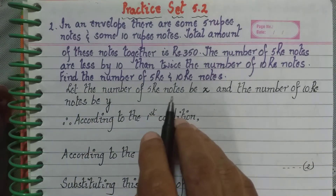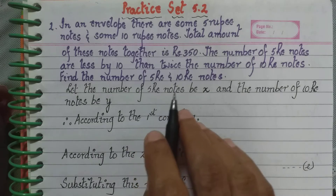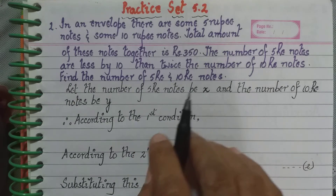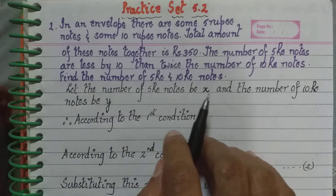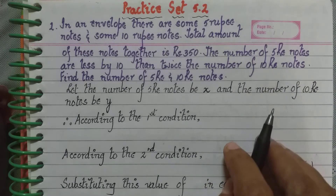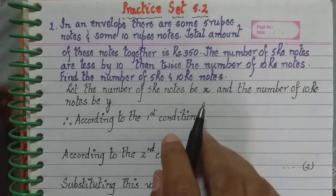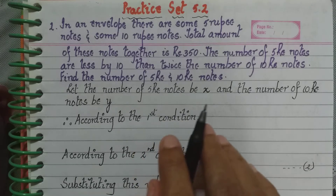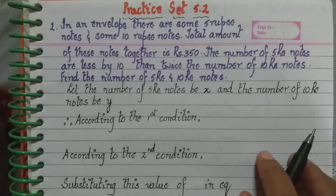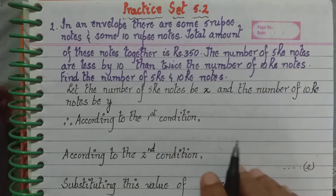To understand the approach: if I have 4 five-rupee notes, the total amount from them is 4 × 5 = 20. If I have 6 ten-rupee notes, the amount from those is 6 × 10 = 60. So the total with me would be 20 + 60 = 80. This is how we will form our equation.